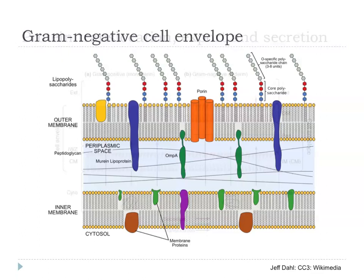To give more insight into the gram-negative cell envelope, which is the target of this lecture and three of the five lectures: we have the inner membrane with membrane proteins, the periplasmic space with peptidoglycan and periplasmic proteins, then the outer membrane and lipopolysaccharide on the outside. The challenge in gram-negative protein secretion is to get stuff all the way across.